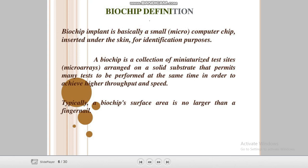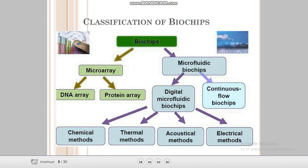Biochip definition: a biochip implant is basically a small computer chip inserted under the skin for identification purposes. A biochip is a collection of miniaturized test sites arranged on a solid substrate that permit many tests to be performed at the same site to achieve higher throughput and speed. Typically, a biochip surface is no larger than a fingernail.